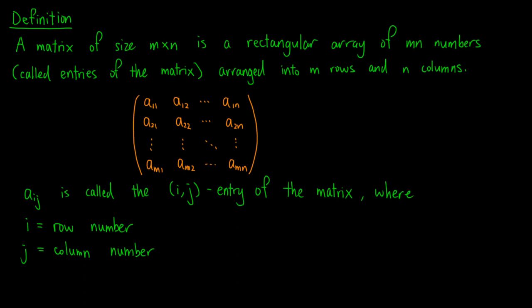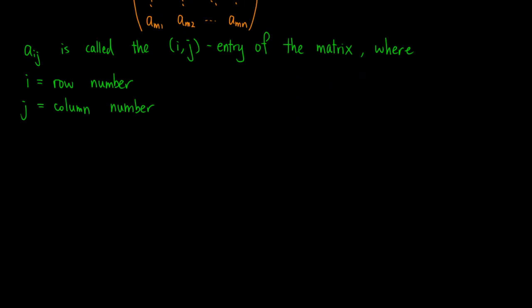Notice that in this notation, the first number i always represents the row number, and j always represents the column number, but not the other way round. We will also denote such a matrix by square bracket aij.